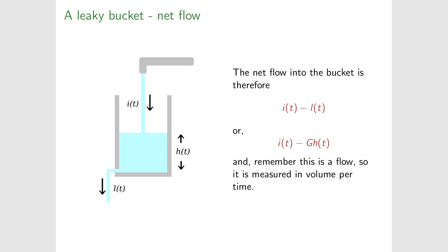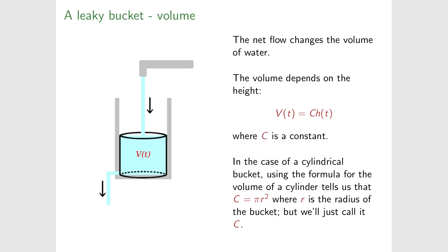In summary, the net flow into the bucket is i(t) minus l(t), or i(t) minus G·h(t). This is a flow measured in volume per time. If i(t) isn't equal to G·h(t), the volume changes with time. The volume is proportional to h(t): volume equals C·h(t), where C equals π r² for a cylinder. We call it C to keep it applicable to the neuron case.